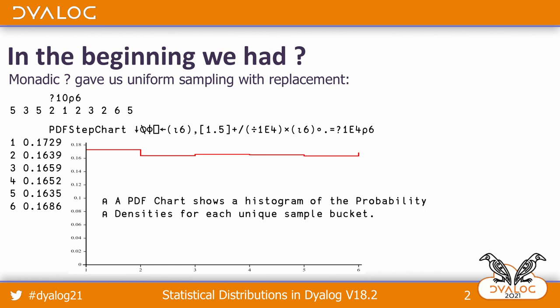When we started APL many, many years ago, we did have a thing called question mark. Monadic question mark gave us uniform sampling with replacement. So if I enter question mark 10 reshape 6, I get a random set of numbers in the set of one to six, and you see that there are some repeats.